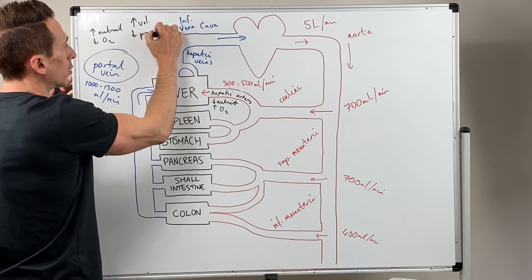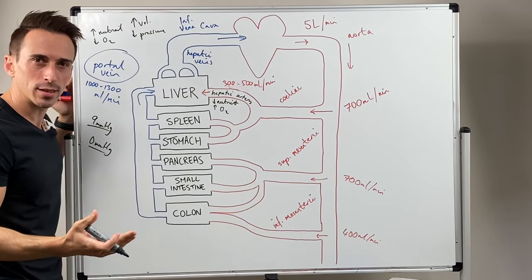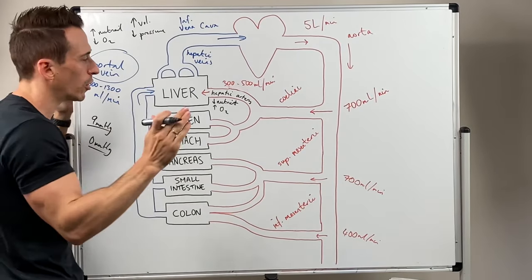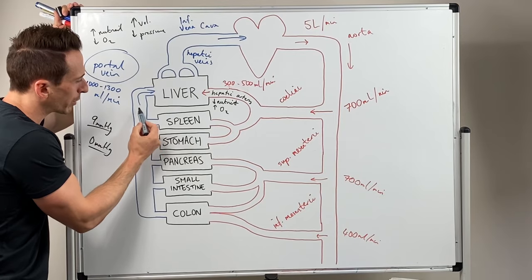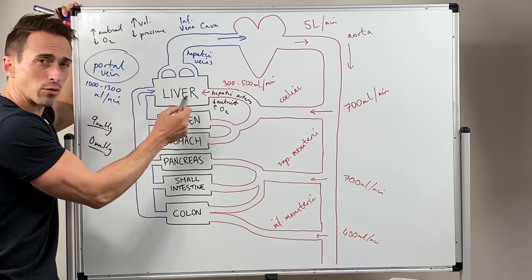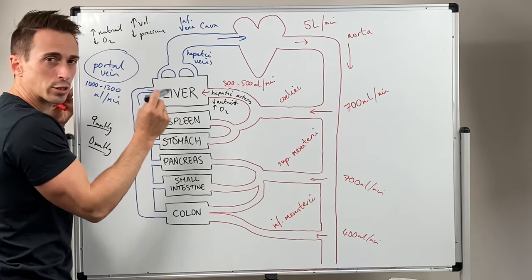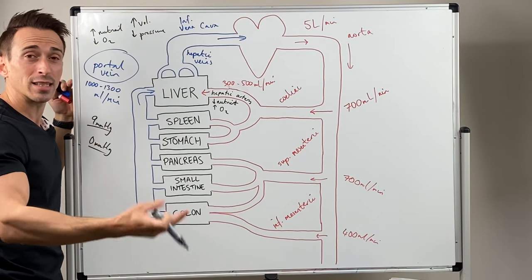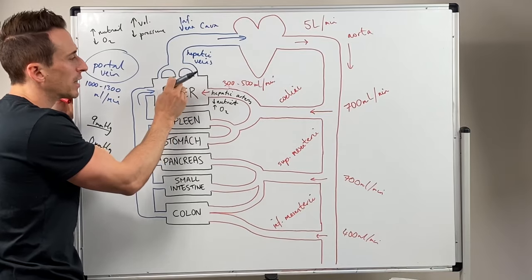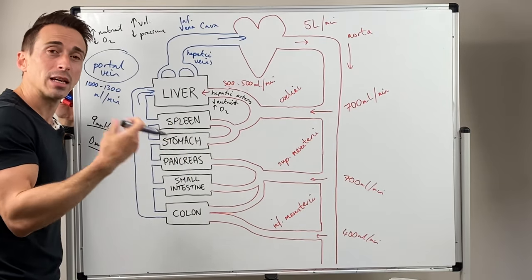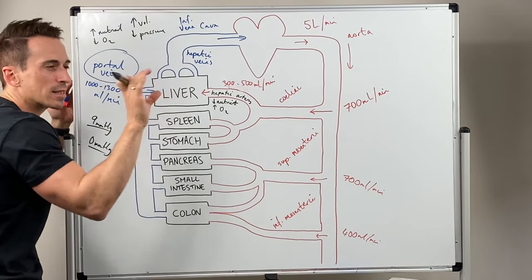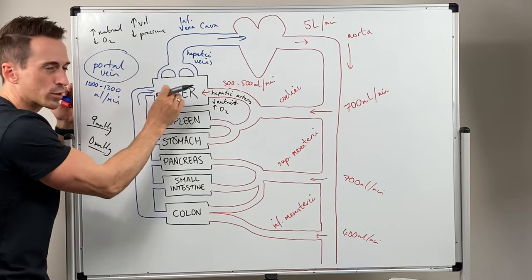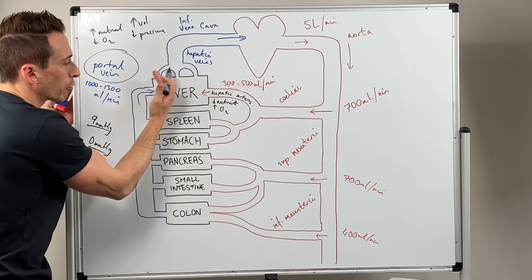Now the reason why I'm telling you this is because all of this blood that's coming in has to go through these sinusoids. If you damage the liver through alcoholism or through poor diet or through a disease like hepatitis for example, these sinusoids can become fibrotic, scar-like. And what it does is it starts to constrict the blood vessels coming in and the blood pressure backs up.